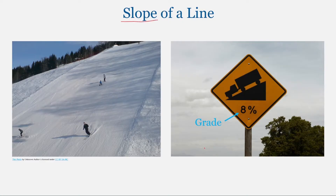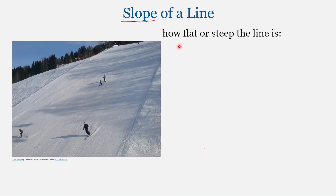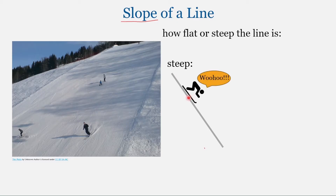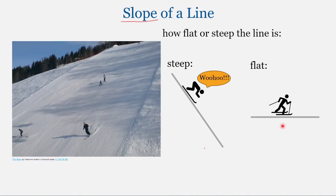You have probably heard the term slope before. It is used to describe the steepness or tilt of something — maybe when talking about ski slopes or on road signs, where we have the slope or grade of a road. In math, we use it to describe how steep or flat a line is. If a line is very steep, it goes down or up rapidly. This downhill skier is going to fly down that hill very quickly. But if a line is flat, that same downhill skier is not going to be moving very much, and he may have to switch to cross-country skiing to get anywhere.